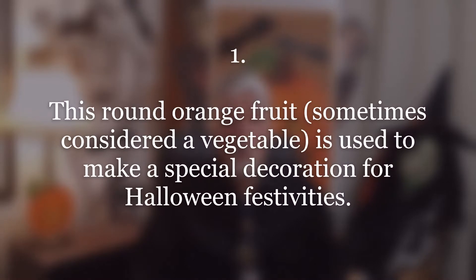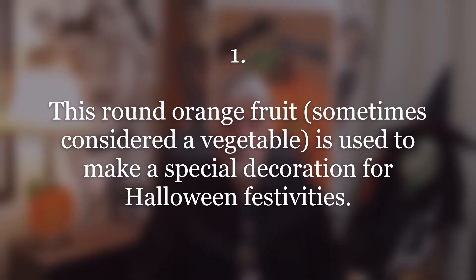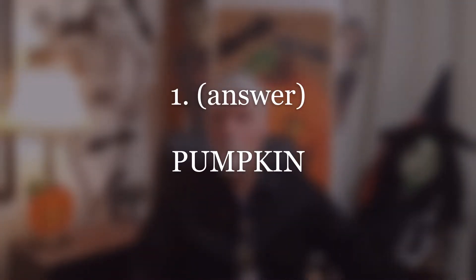Number one. This round orange fruit, sometimes considered a vegetable, is used to make a special decoration for Halloween festivities. And do you know what it is? A pumpkin. I always thought a pumpkin was a vegetable and I discovered quite recently that it is a fruit.